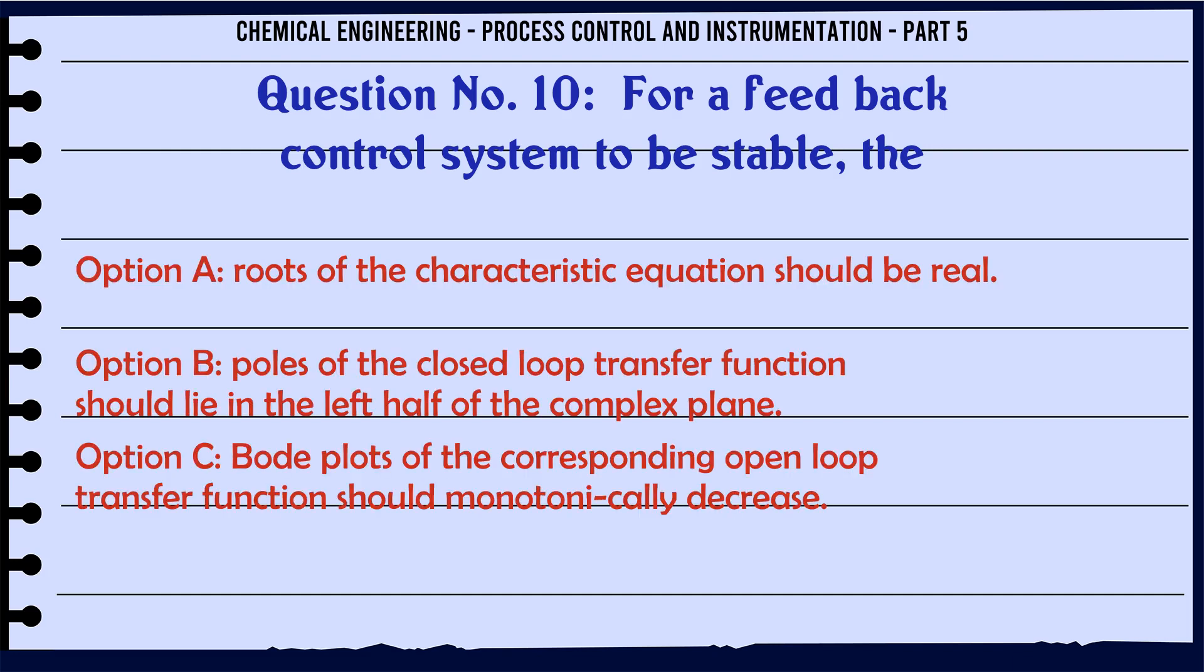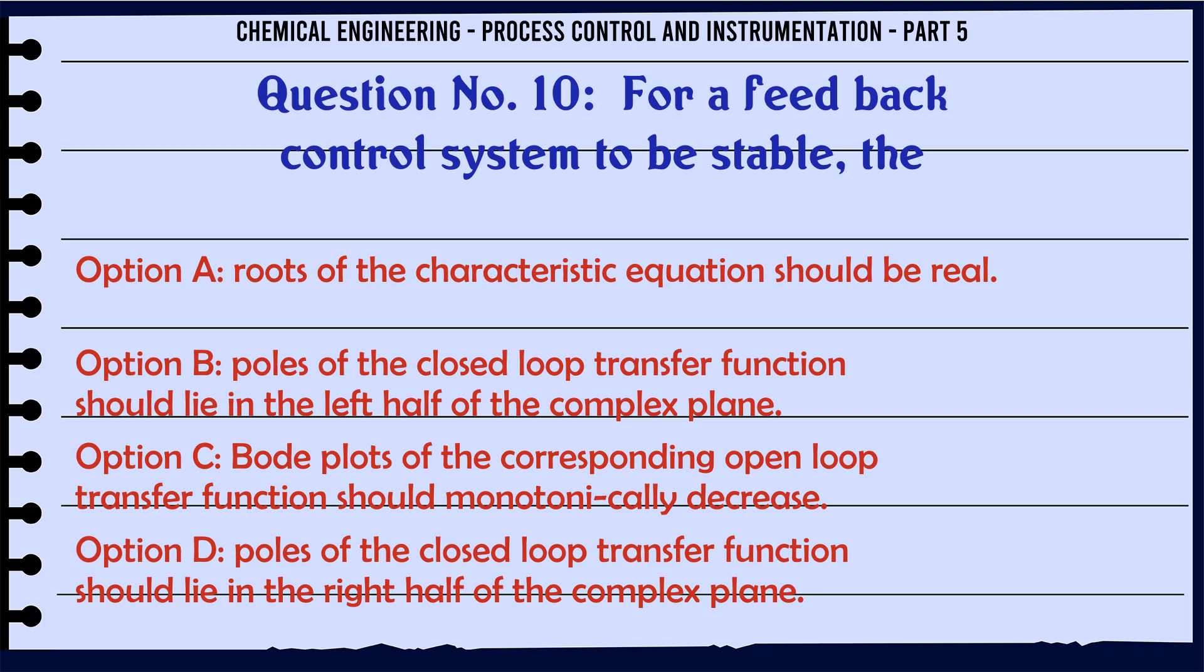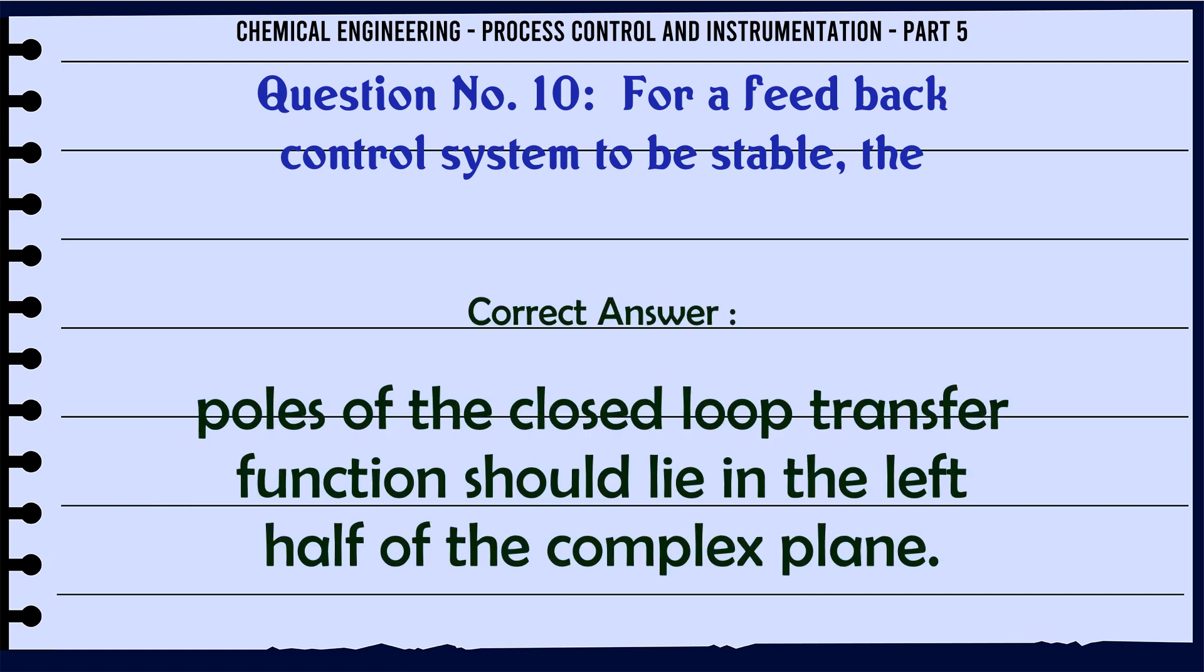For a feedback control system to be stable, the: A. Roots of the characteristic equation should be real. B. Poles of the closed loop transfer function should lie in the left half of the complex plane. C. Bode plots of the corresponding open loop transfer function should monotonically decrease. D. Poles of the closed loop transfer function should lie in the right half of the complex plane. The correct answer is: Poles of the closed loop transfer function should lie in the left half of the complex plane.